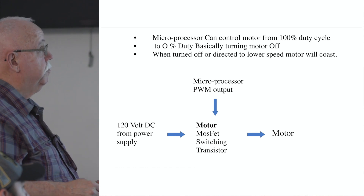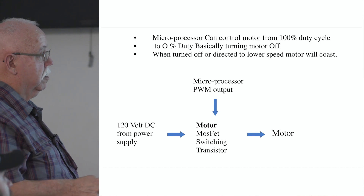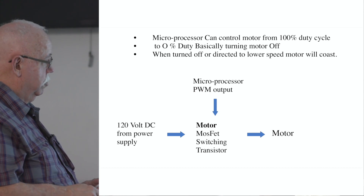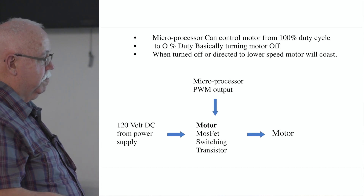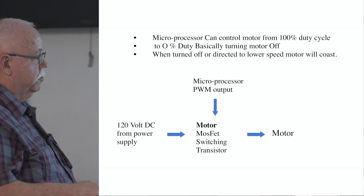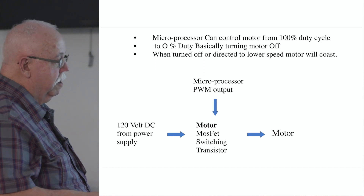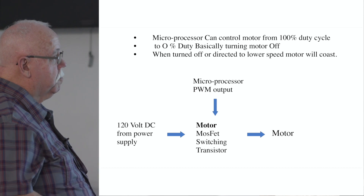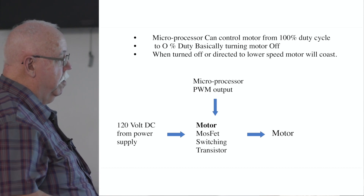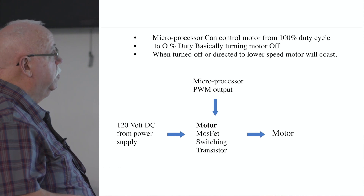The microprocessor is sending the pulse width modulation signal. You've got 120 volts waiting to be fed to the control, and this MOSFET — think of it as a switch — is turning it on and off 10,000 times a second, then it goes to the motor from there. If the microprocessor asks it to run at 10% duty cycle, you get about a 12-volt output.